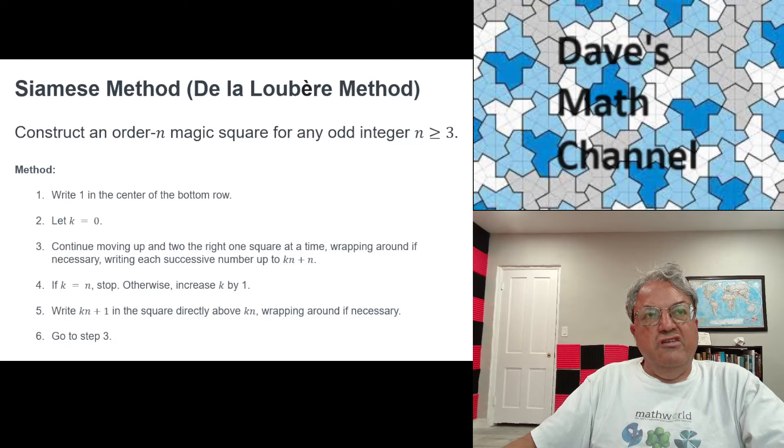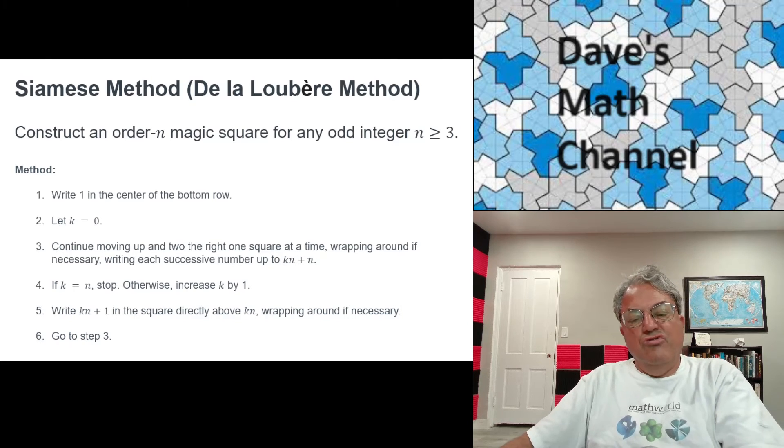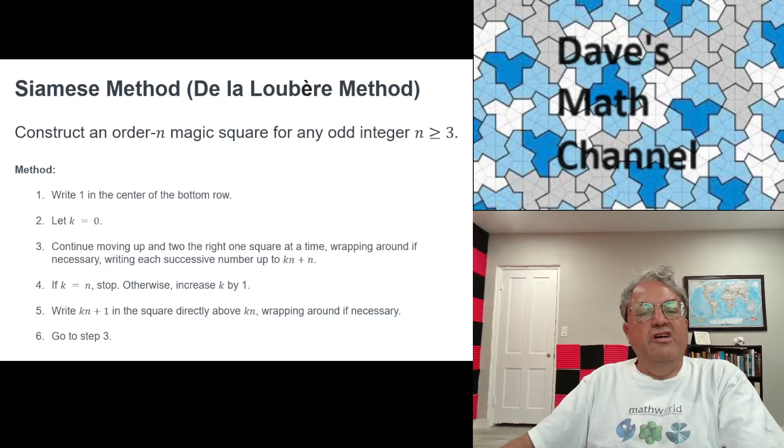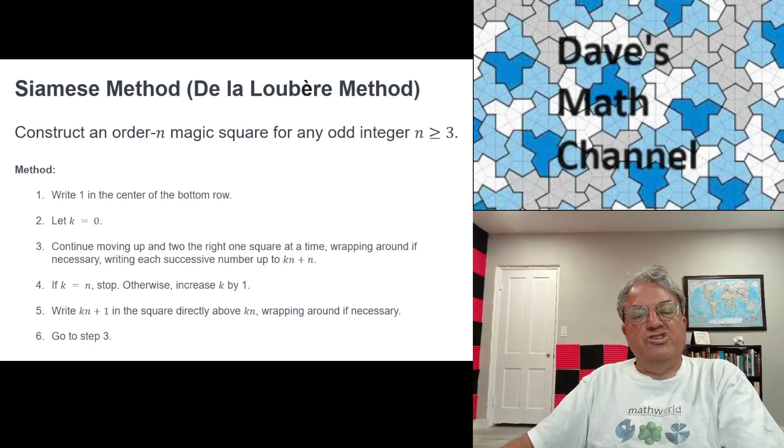And when you're done, you'll be left with a magic square, order n magic square. I'm not going to prove that, but it's not that hard to prove, actually. Maybe you guys can prove it yourself if you feel ambitious. But anyway, that's the method.